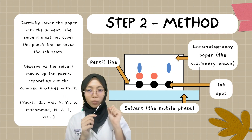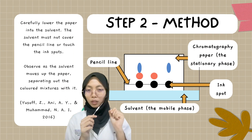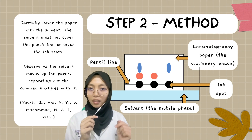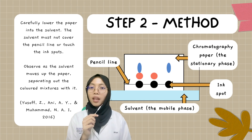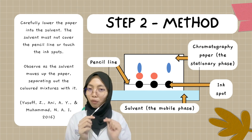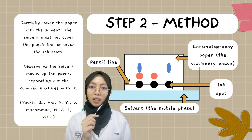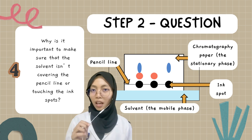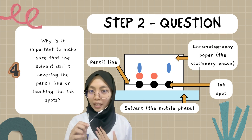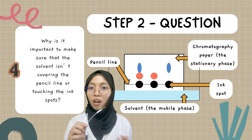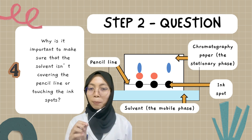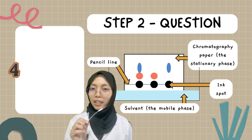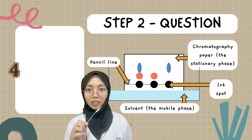Step two: carefully lower the paper into the solvent, but the solvent must not cover the pencil line or touch the ink spots. Then observe as the solvent moves up the paper, separating the coloured mixtures. It is important that the solvent does not cover the pencil line or touch the ink spots because the solvent would wash away the ink and affect the result.